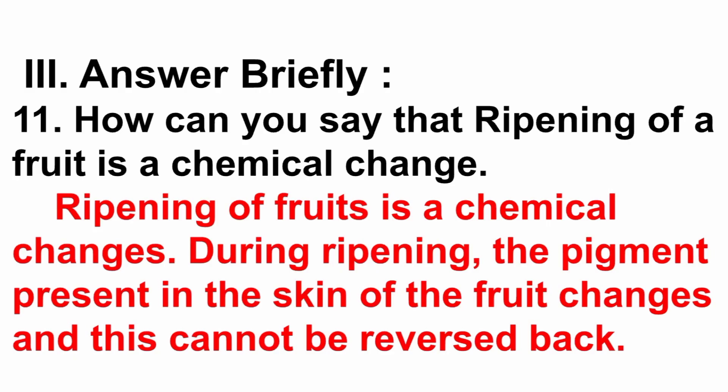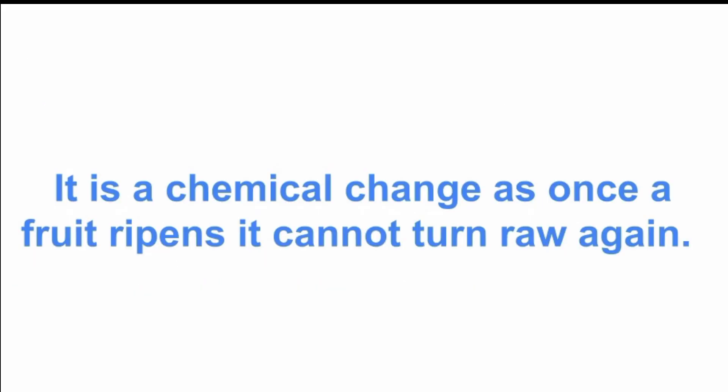Third section, answer briefly. Eleventh question: how can you say that ripening of a fruit is a chemical change? Answer: ripening of fruits is a chemical change because during ripening, the pigment present in the skin of the fruit changes and this cannot be reversed back. It is a chemical change as once a fruit ripens, it cannot turn raw again.